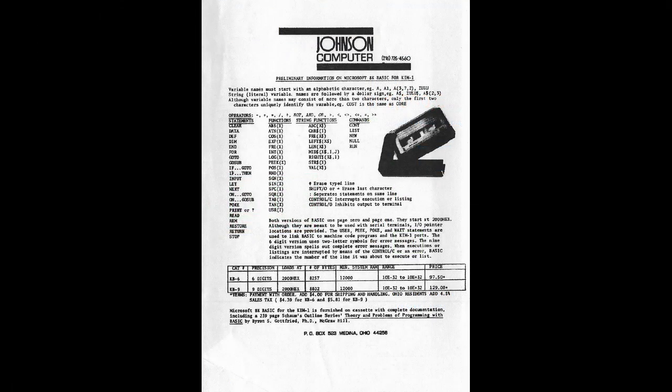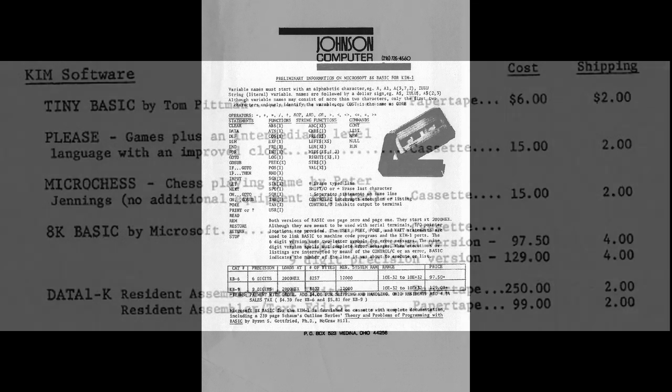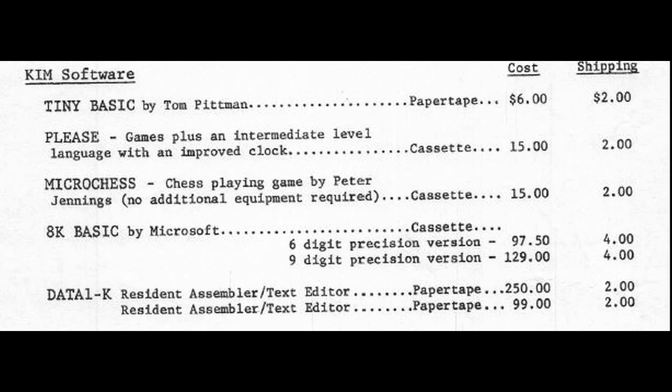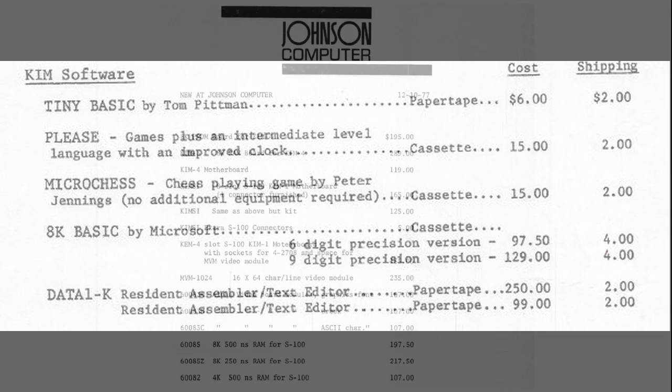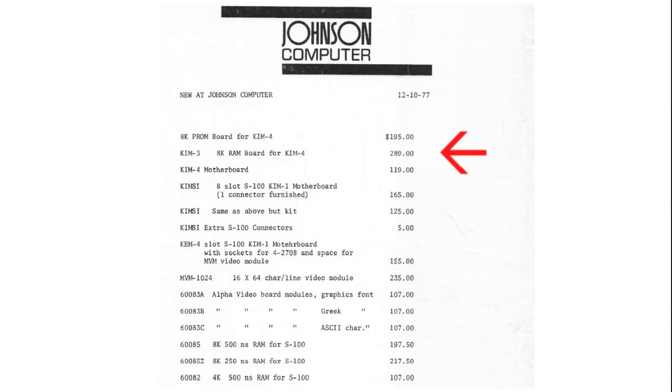In 1977, a floating-point BASIC was available from Microsoft. It needed 12K to run, and cost about $130 for the program, and about $300 for the additional memory. That would be about $2,000 today. That was a lot of money for a newlywed couple just out of school.